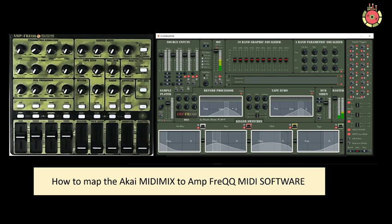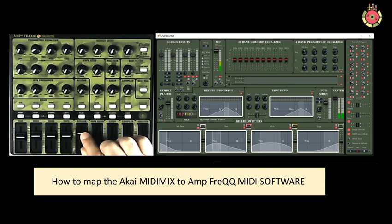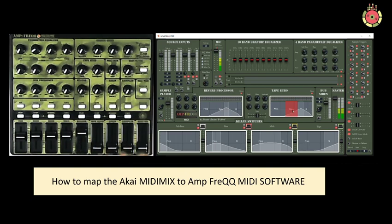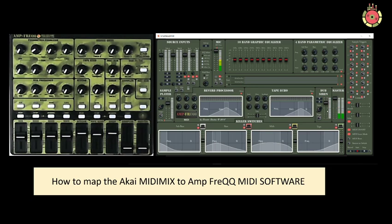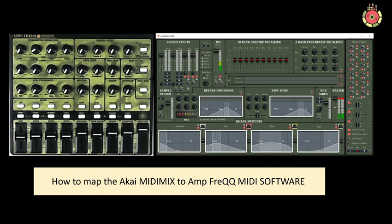Then we've got the reverb over here — this is the reverb gain. And then we've got the tape echo gain. Siren is over here — siren gain. And then we've got the sample. And lastly, master. So that's all the faders assigned.